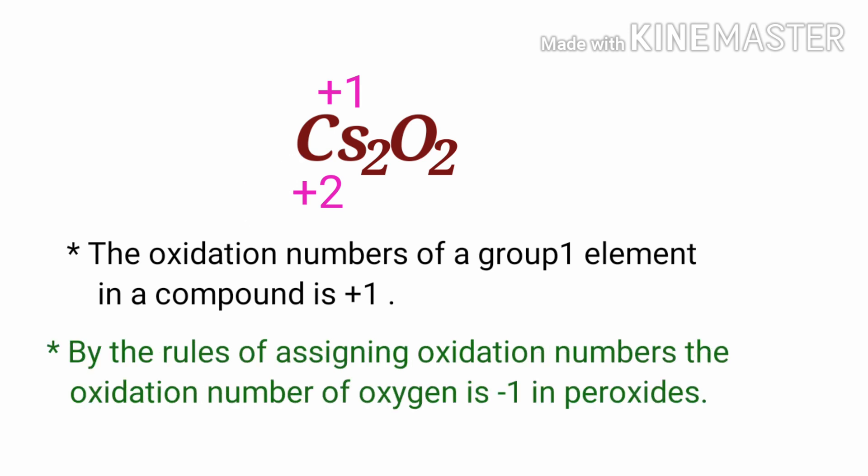By the rules of assigning oxidation numbers, the oxidation number of oxygen is minus 1 in peroxides. In this compound, 2 oxygen atoms are present, so the total oxidation number of oxygen is minus 2.